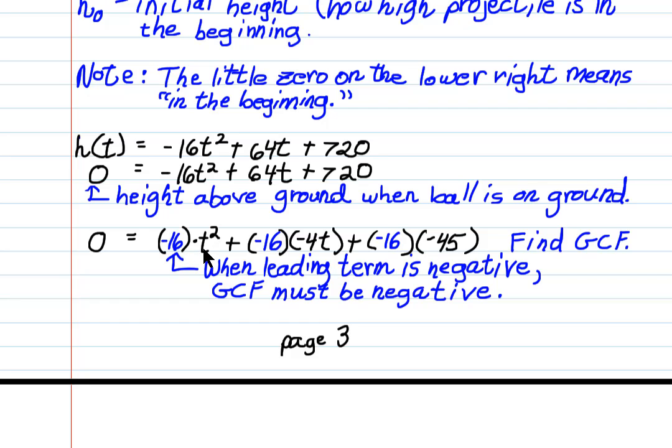Negative 16t squared plus negative 16 times negative 4t plus negative 16 times negative 45. I have to take a negative 16 out of each term, but this is positive 64. So I have to make sure that whatever two numbers I multiply have got to be positive 64. That is, when I multiply them, I have to get the answer positive 64. And negative times negative is positive. So negative 16 times negative 4 is positive 64. And negative 16 times negative 45 is positive 720. And now I have negative 16 very clearly separated out as the GCF of each term.